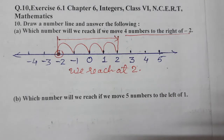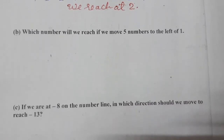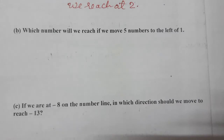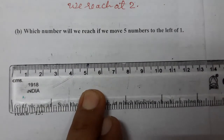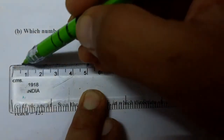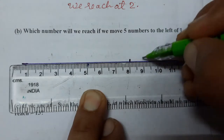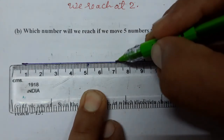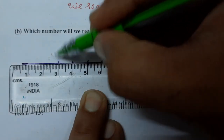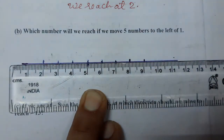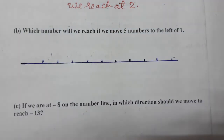Now the second part: which number will we reach if we move five numbers to the left of 1? So again, let's make a number line. We are taking one centimeter gaps and marking the points.